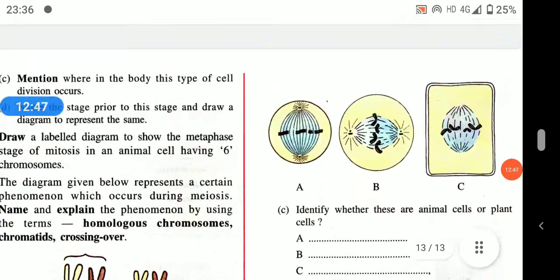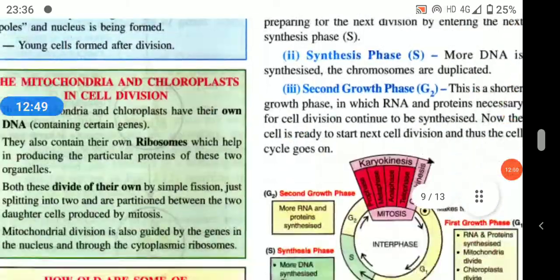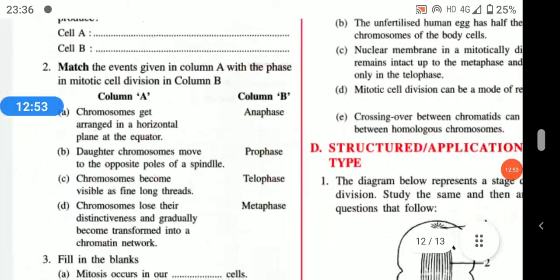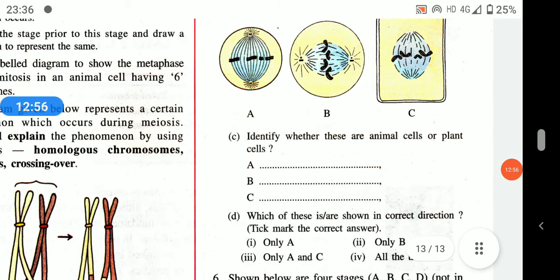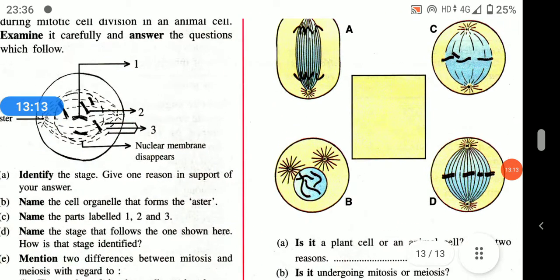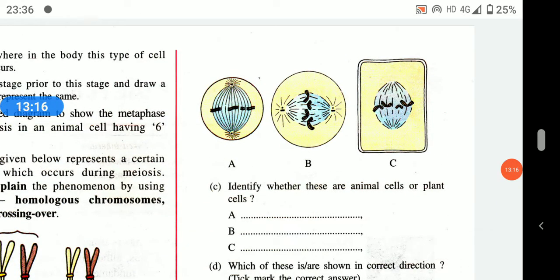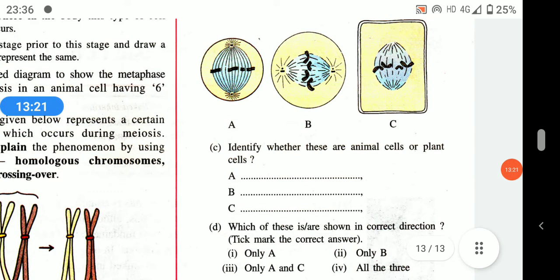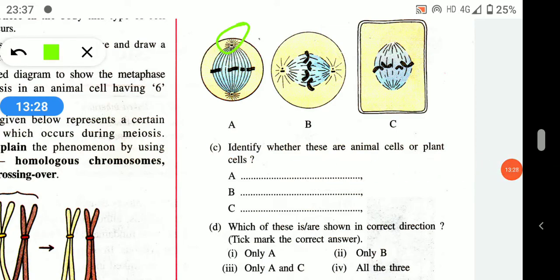Three diagrammatic sketches are given — identify the stages. A is metaphase, B is also metaphase, and C is also metaphase. The diploid number of chromosomes shown is four. A and B are animal cells due to the presence of centrioles and aster rays; C is a plant cell due to the absence of aster rays and centrioles.